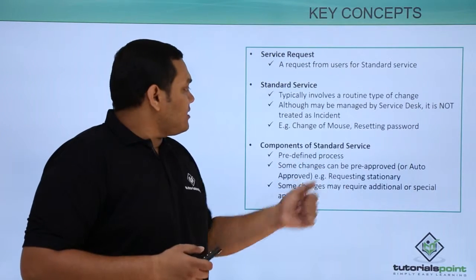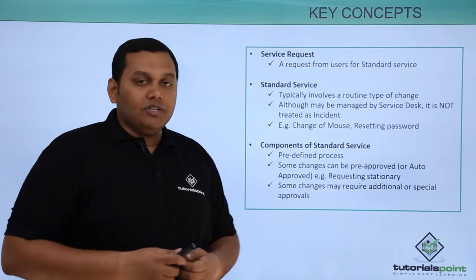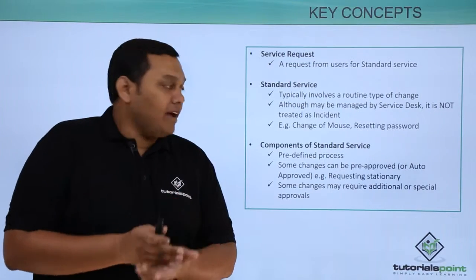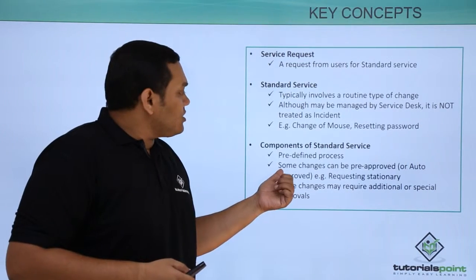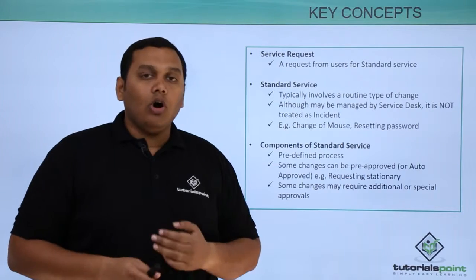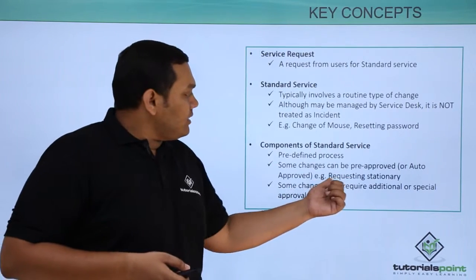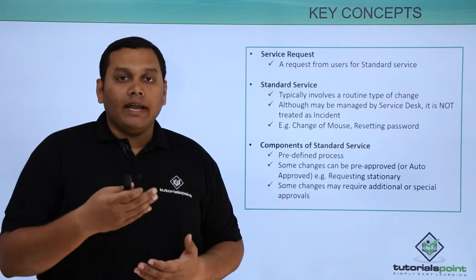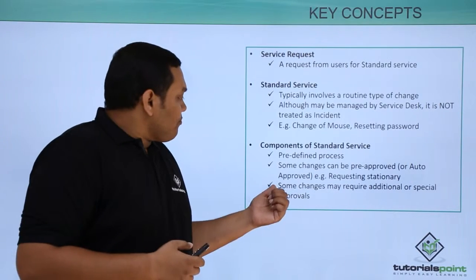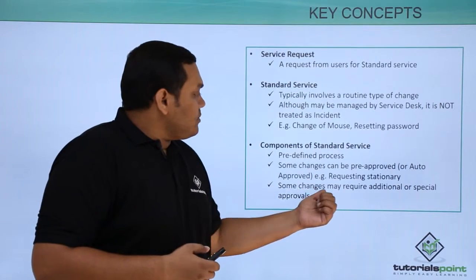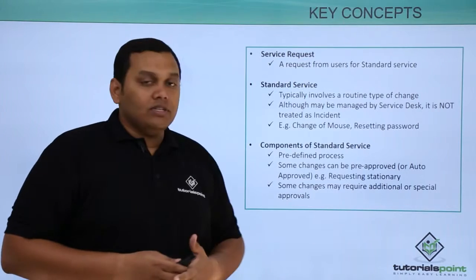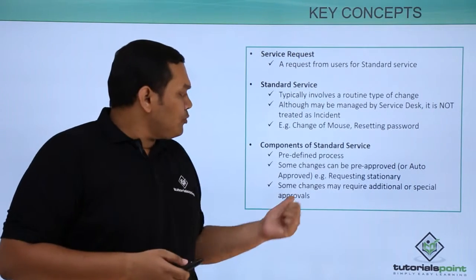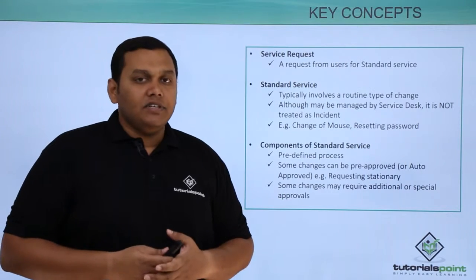Components of a standard service include predefined processes. Some changes can be pre-approved or auto-approved — for example, requesting stationery like pens, rough notes, or any papers required. Some changes may require additional or special approval from management to proceed with the standard service request.